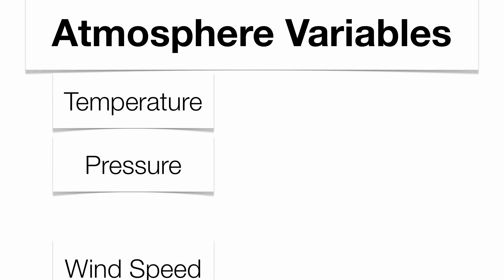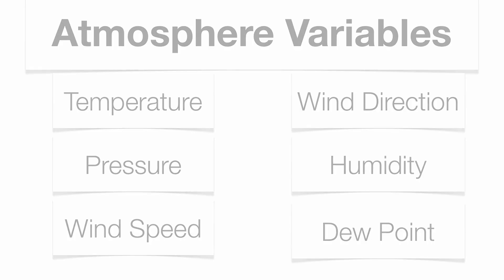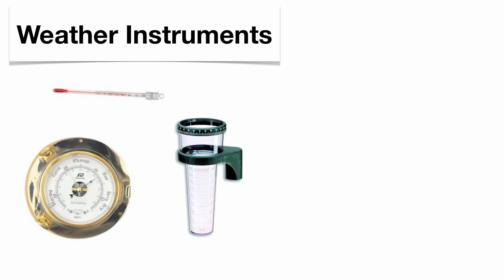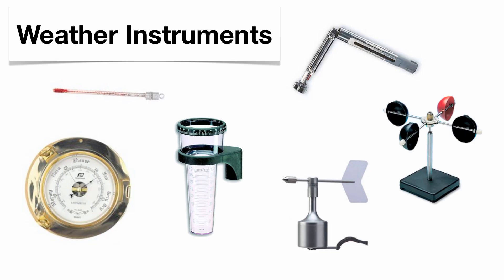There are some atmospheric variables we'll talk about regarding weather, including temperature, pressure, wind speed, wind direction, humidity, and dew point. To measure these variables, you'll use instruments including a thermometer to measure temperature, a barometer to measure pressure, a rain gauge to measure the amount of precipitation, a sling psychrometer to measure relative humidity and dew point, a wind vane or weather vane to tell you wind direction, and an anemometer to tell you wind speed.